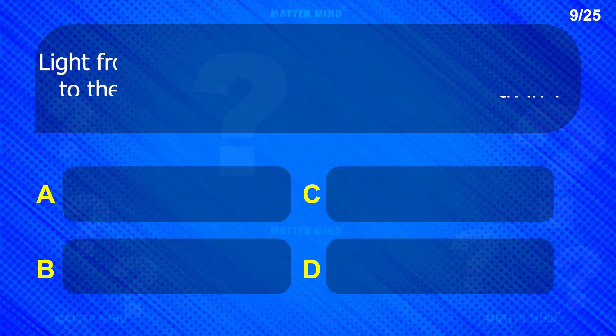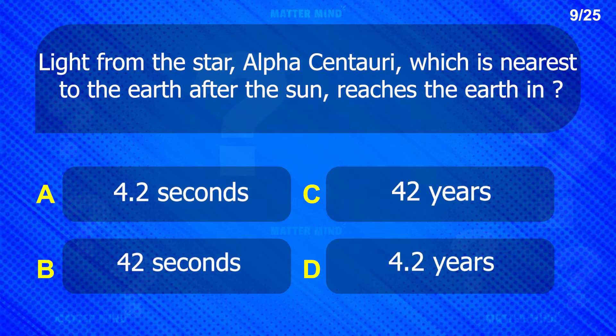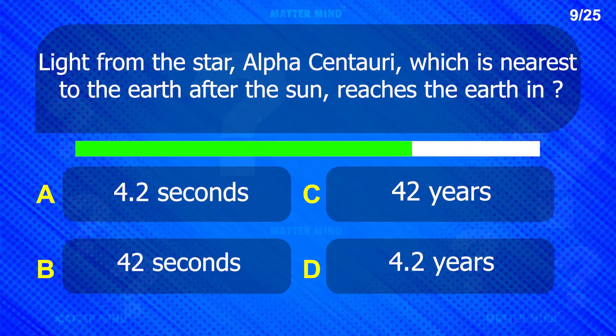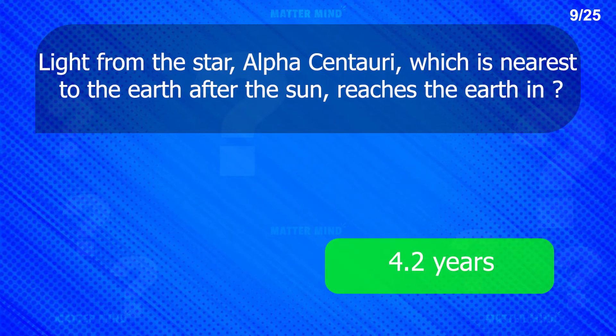Light from the star Alpha Centauri, which is nearest to the Earth after the Sun, reaches the Earth in — 4.2 years.